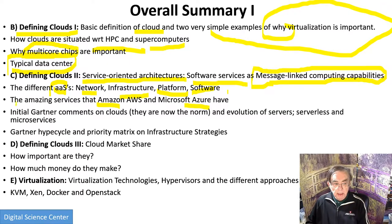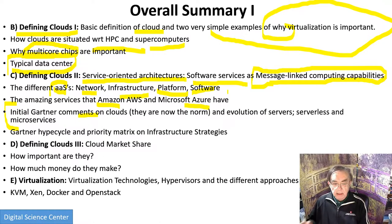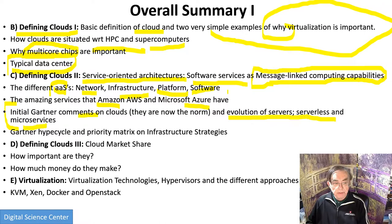Then we look at some analysis by the Gartner company on clouds, where the most critical point is that clouds are the norm. When I started these talks around 2008 to 2010, clouds were just starting and challenging the establishment. Now they are the establishment, and people try to evolve them. Serverless computing and microservices are part of that evolution. Gartner has things called hype cycles, and we do that along with the associated priority matrix for infrastructure strategies — how you put together giant data centers.